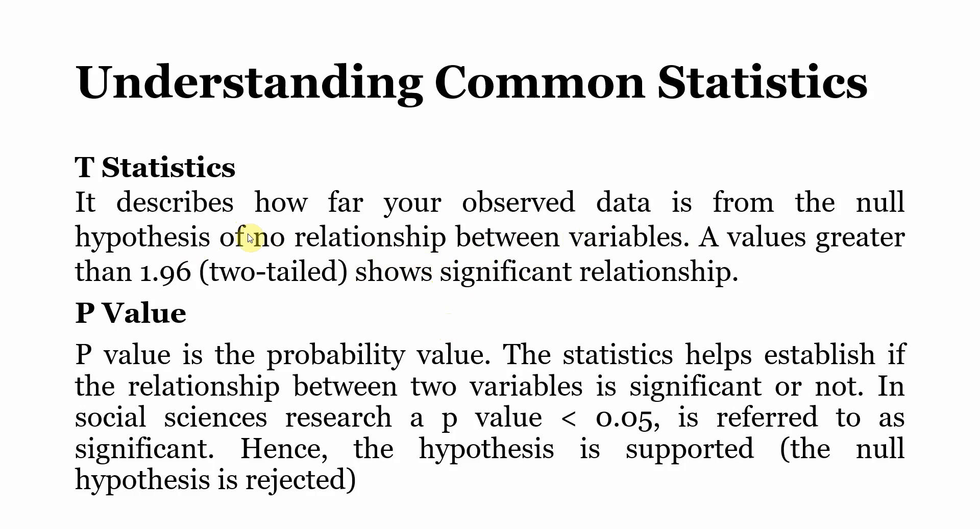And finally, p-value, that is your probability value. The statistics help establish if the relationship between two variables is significant or not. Now in social sciences research, a p-value less than 0.05 is referred to as significant. Hence, the hypothesis is supported, that is your null hypothesis is rejected. And these are common statistical terms that we are going to come across during our structural model assessment. So it's very important that one understand these concepts.